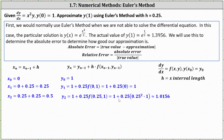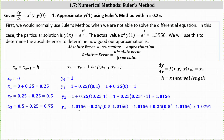Now we determine x sub 3 and y sub 3. x sub 3 equals x sub 2 plus h, which is 0.5 plus 0.25, so x sub 3 equals 0.75. y sub 3 equals y sub 2 plus h times f of x sub 2 comma y sub 2, giving us 1.0156 plus 0.25 times f of 0.5 comma 1.0156. The function value equals 0.5 squared times 1.0156, giving y sub 3 equals 1.0156 plus 0.25 times 0.5 squared times 1.0156, which is approximately 1.0791.